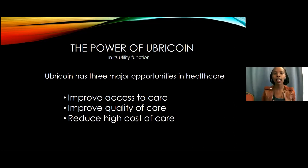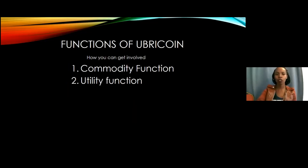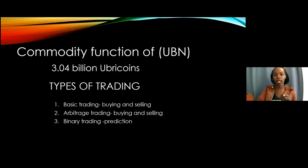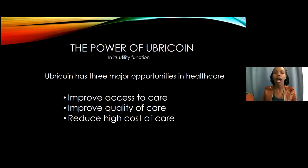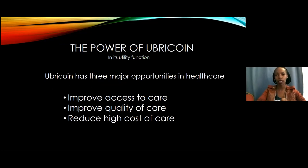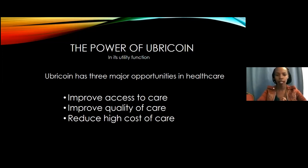Then we have the power of Ubicoin, which lies in its utility function. Ubicoin has two functions: commodity and utility. The utility function is where the real power of Ubicoin lies. Ubicoin has three major opportunities in healthcare. Most of us have interacted with the Kenyan healthcare system and know it is very bad. These three opportunities are: number one, to improve access to care; number two, to improve quality of care; and number three, to reduce the high cost of care.